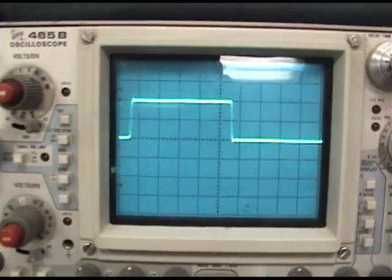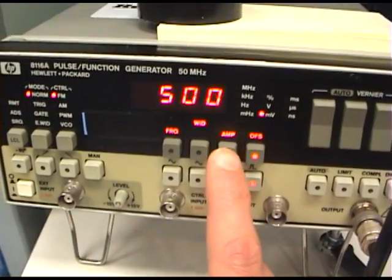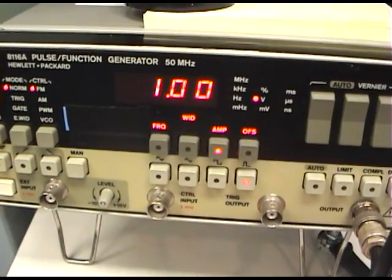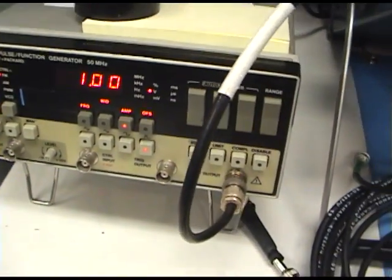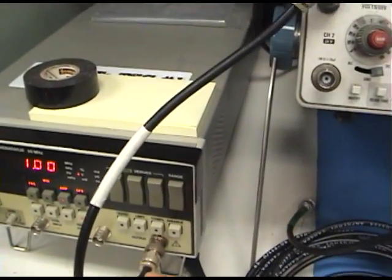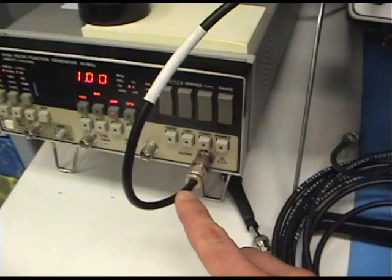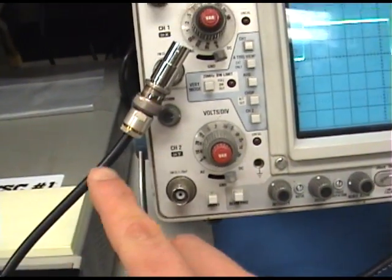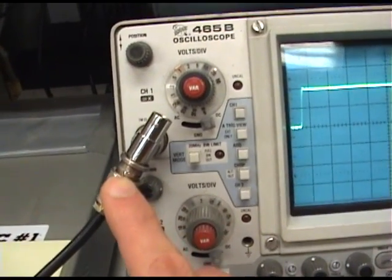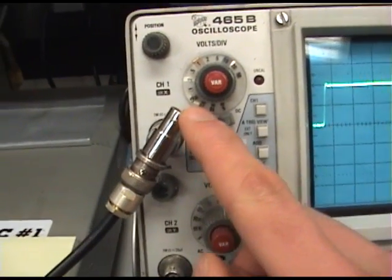But how can that be if I set the amplitude to 1 volt? Well, what's happening is that we have a pulse that is traveling from the pulse generator. It comes up, it sees this open circuit.